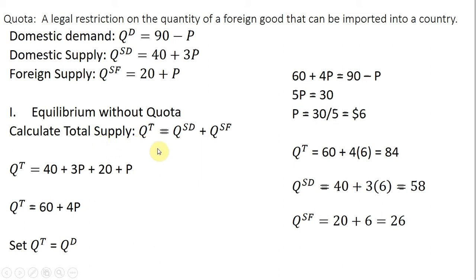So total supply is just the supply of the domestic producers plus the supply of the foreign producers. So here's the math that we want to do. So for Q^SD, we have 40 + 3P.